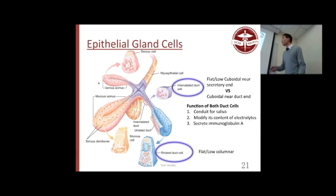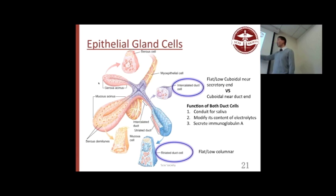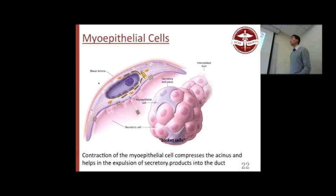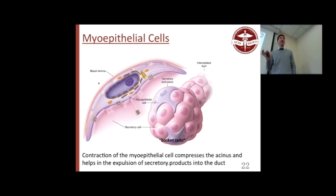Intercalated versus striated duct cells both function the same way — they're both doing electrolyte modification, absorbing and secreting electrolytes. Know IgA is secreted there. Myoepithelial cells are squeezing the glands and are innervated by autonomics; they're called basket cells. Know the terms 'basket cells' and their function — they help express secretion from glands.